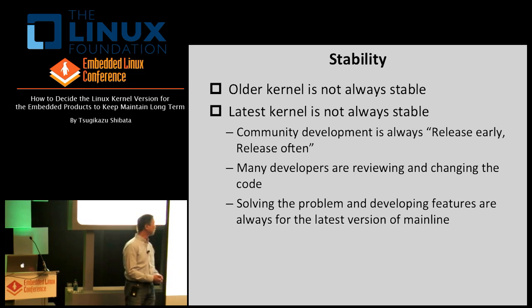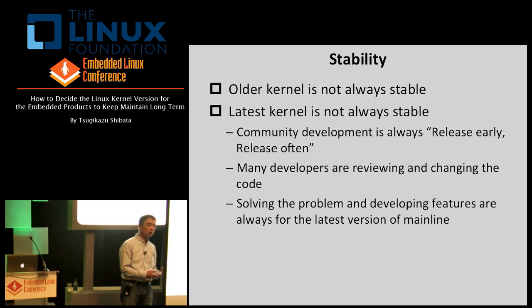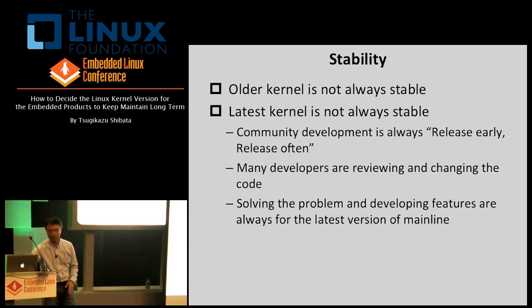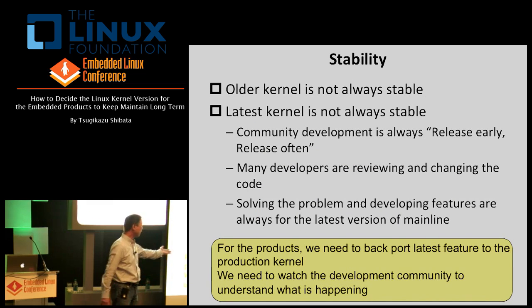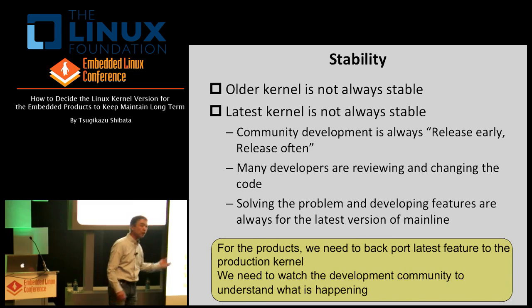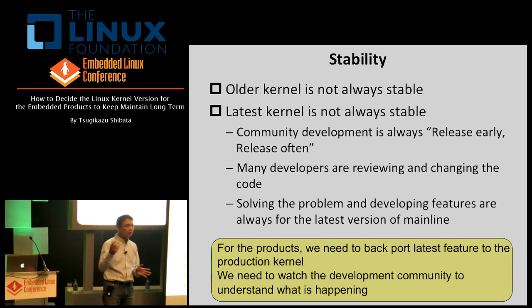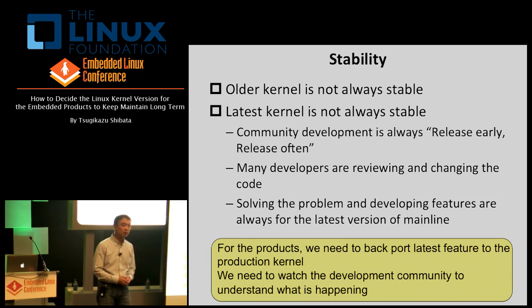Solving problems and developing features are always for the latest kernel version, but the production kernel we use is a slightly older version. So how the backporting works — what kind of features should be backported to the production kernel — that's another point. For products, we need to backport the latest features to the production kernel, and we need to watch the development community to understand what is happening. What version is stable is very important, and to determine that we should watch the Linux kernel.